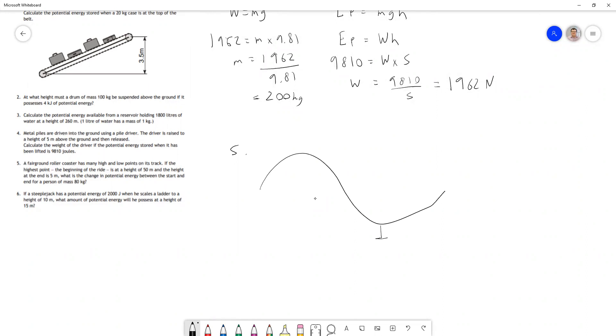If the roller coaster looks a bit like this (sketching), and this point is five meters above the ground, and this is the high point which is 50 meters above the ground, it's the same as being 45 meters above the point it drops down to on the ride. We could do the whole calculation using 45 meters as the height. That will save us time, so that's what we're going to do.